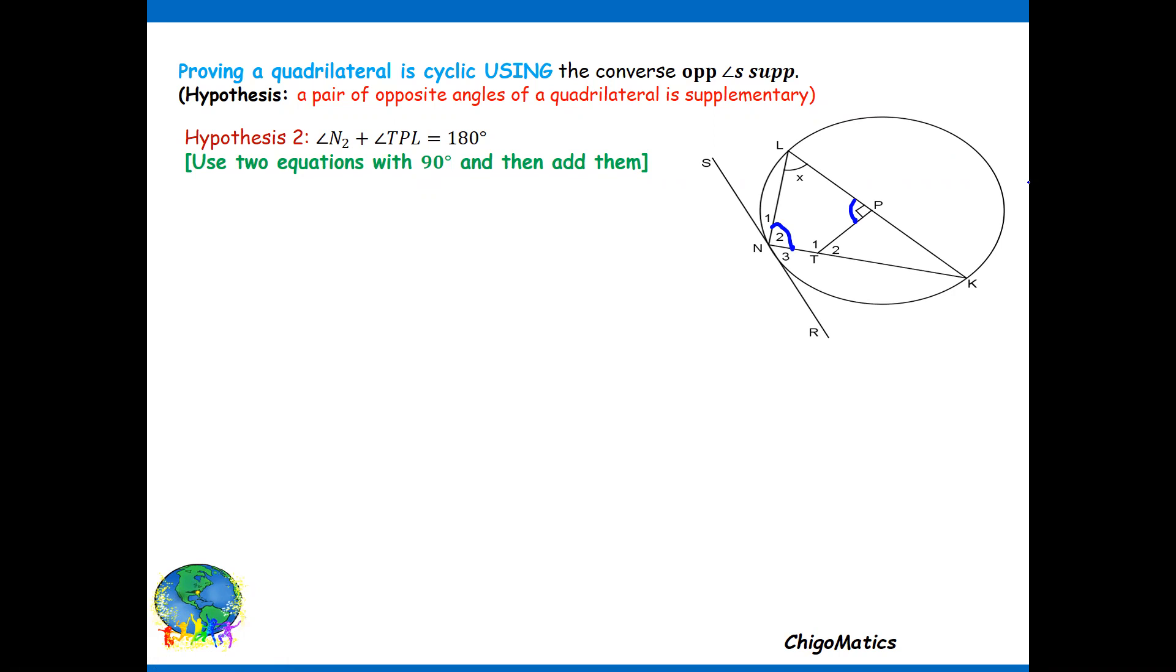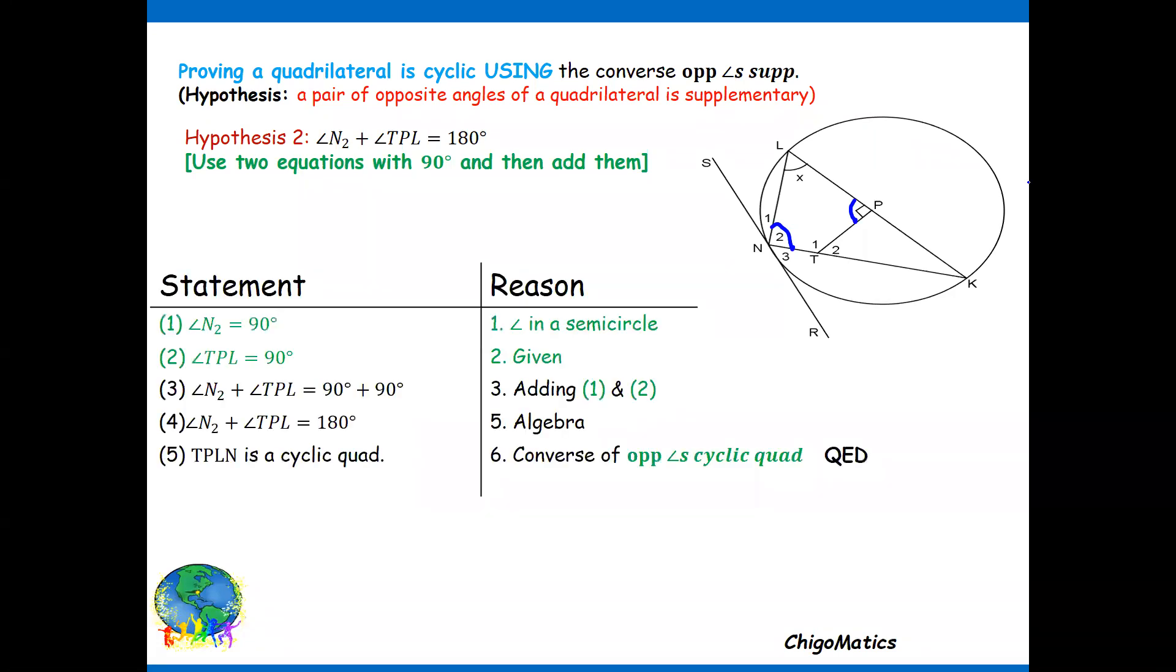But now I'm using the idea of coming up with the equation, but still observe I'm still working with the quadrilateral that we want to prove is cyclic. So first I indicate that N equals 90, subtended by the diameter KL, then TPL equals 90. That is given information.